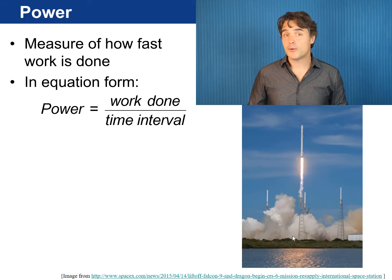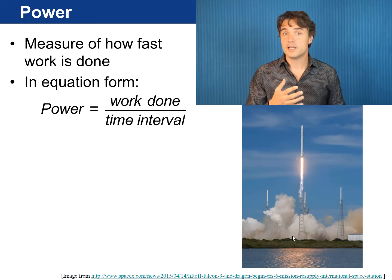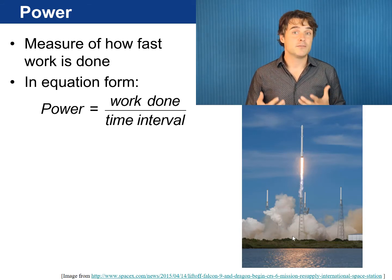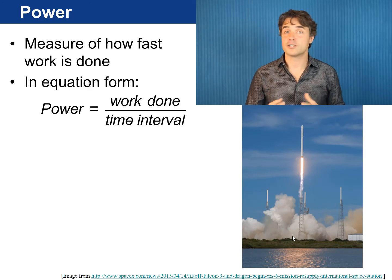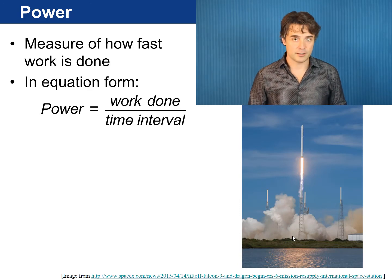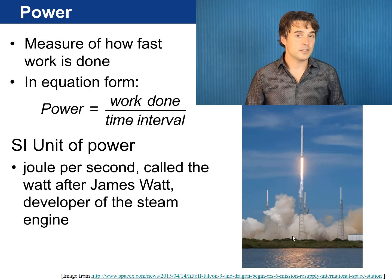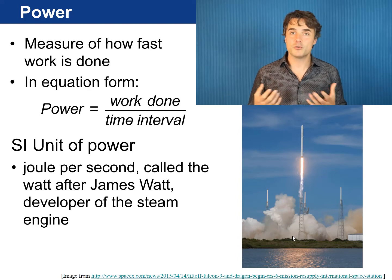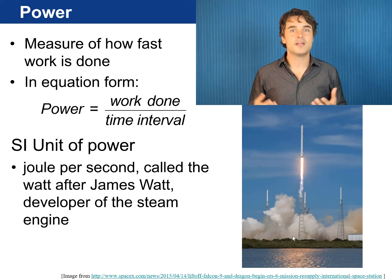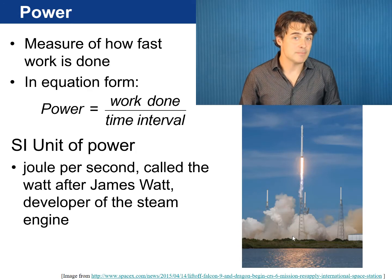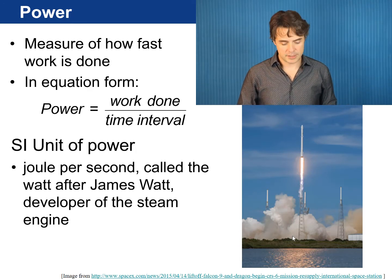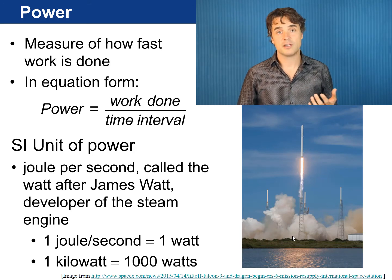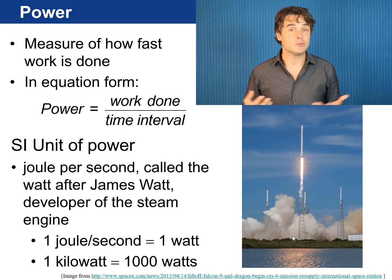In equation form, power equals the work done divided by the time interval over which this work was done. So, if the same amount of work is done in a shorter time interval, the power is greater. The SI unit of power is joules per second. In physics, this unit has been given its own special name, the watt. This is named after James Watt, the developer of the steam engine. So, one joule per second equals one watt. And of course, one kilowatt equals one thousand watts.